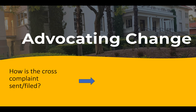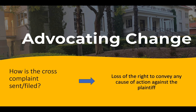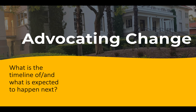As to how the cross-complaint is filed, the defendant must file the cross-complaint to the plaintiff within 30 days, or he or she will lose the right to convey any cause of action against the plaintiff and the lawsuit will proceed accordingly. Once the defendant files the cross-complaint, both the plaintiff and defendant must then file their answers or other responses. These answers are called pleadings, and the pleadings must contain a factual and legal basis for the claim and a prayer for any damages or relief.